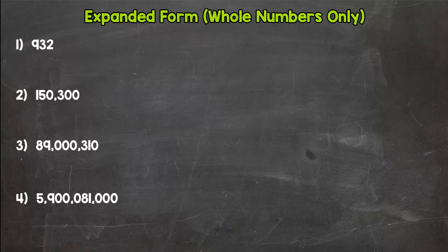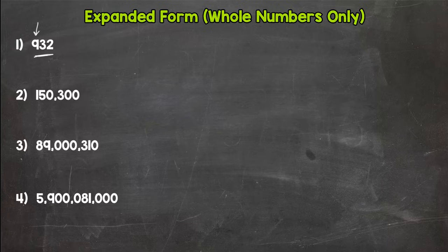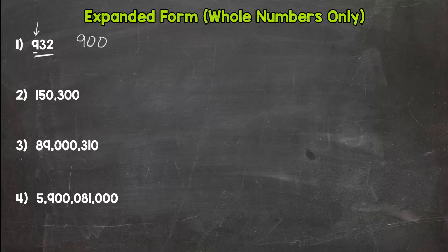Here we go. We'll start with number one. Expanded form basically is just expanding a number out—makes sense, right? You expand it out to show the value of each digit, starting with the greatest value in that number, which is our 9 here. So we're going to start with 900 because that's the value of our 9.